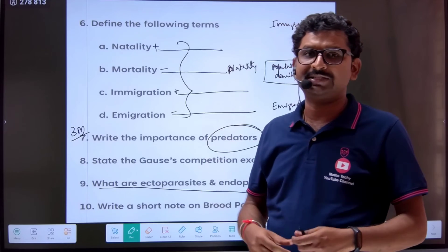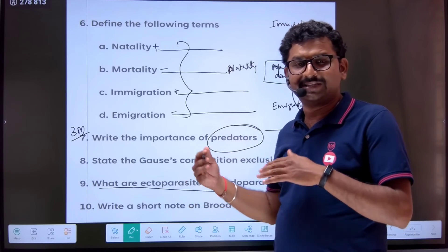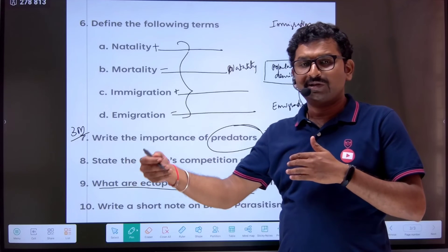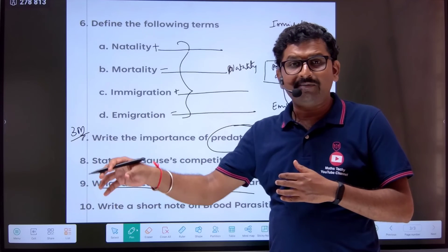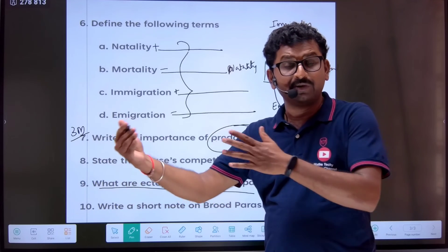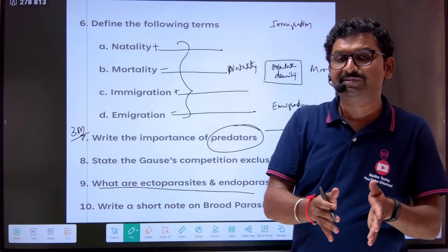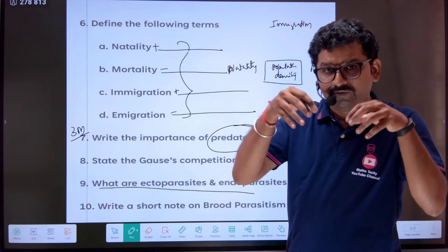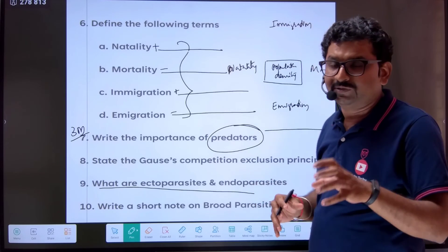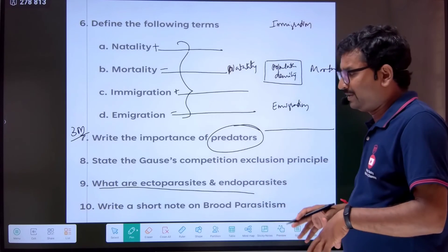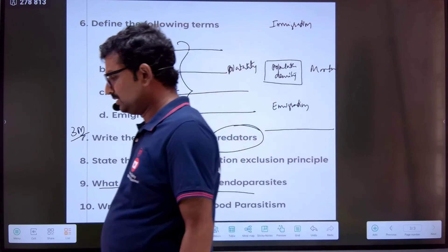There are two types of parasites. Ectoparasites are organisms that harm the host from outside the host body. Endoparasites are organisms that live inside the host body. Examples for both ectoparasites and endoparasites are important to study.